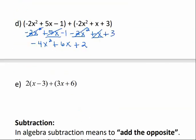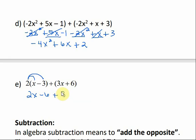In the next example, there's a 2 in front of the first set of parentheses, so we distribute. Multiplying 2 by both terms inside gives 2x minus 6. For the second set, there's a plus sign in front, so nothing changes — just drop the parentheses. Combining like terms: 2x plus 3x is 5x, and negative 6 plus positive 6 cancel out to zero. The answer is just 5x.